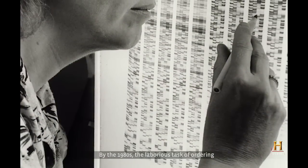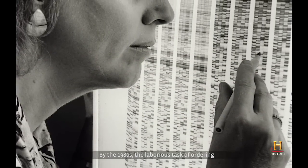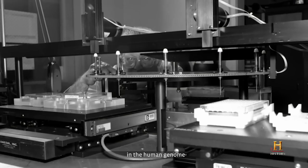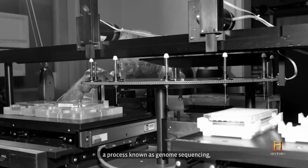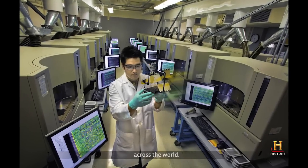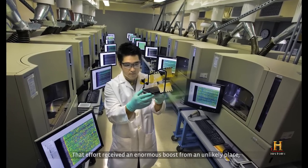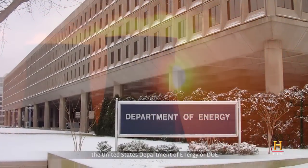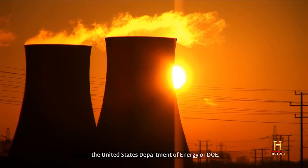By the 1980s, the laborious task of ordering the roughly three billion nucleotides in the human genome, a process known as genome sequencing, was proceeding slowly in scattered laboratories across the world. That effort received an enormous boost from an unlikely place, the United States Department of Energy, or DOE.